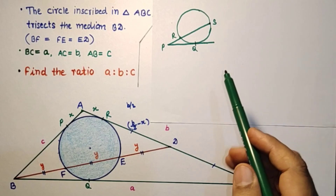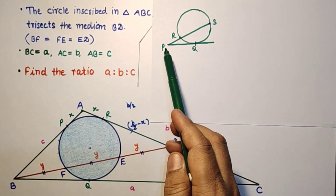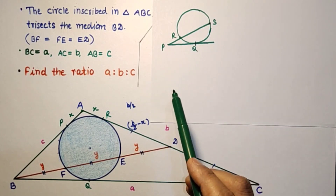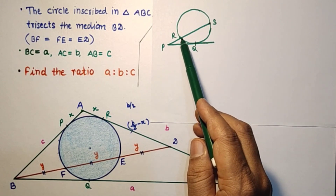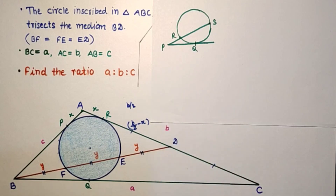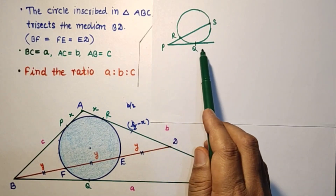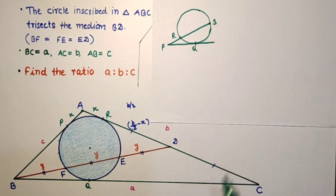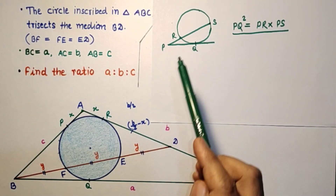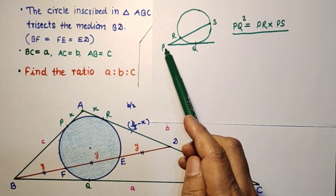We will discuss two important theorems used in this problem. First, the Power of a Point or tangent-secant theorem: if a tangent touches the circle at point Q and a secant intersects at points R and S, then PQ² equals PR times PS. Applying this here: DR² equals DE times DF, and BQ² equals BF times BE.